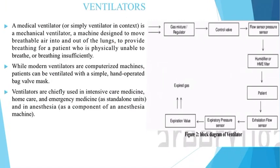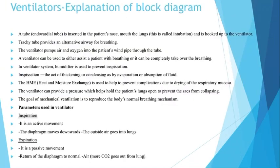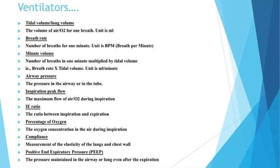Now let's see the various parameters used in ventilators. The first one is inspiration — the intake of oxygen. During this process the diaphragm moves downwards and this process is an active process. The second parameter is expiration — the expelling of carbon dioxide from the lungs. During this process the diaphragm moves upwards, and this process is a passive process. The next parameter is tidal volume or lung volume, which refers to the volume of air or oxygen for one breath and is measured in milliliters.